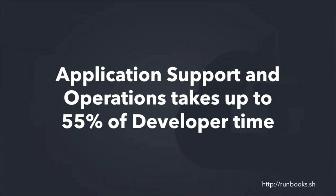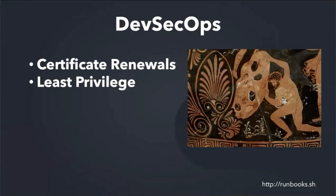What I want to do is show you some tips on how we can automate away some of that toil — those annoying things we have to do every single day. As an example, I'm going to give two examples: one is certificate renewals, and the other is using least privilege and ways to automate some of that. These are all using AWS, though these principles apply to other clouds and other platforms.